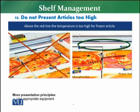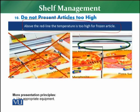Another example of not presenting articles too high is about frozen articles. Above the red line in a chest freezer, the temperature is too high. If you visit a store, you will observe that there is a red line in the freezer. Above that red line, the temperature is higher, and you need to maintain a set temperature to sustain the quality of the product. So the display should not be so high that product quality is affected.